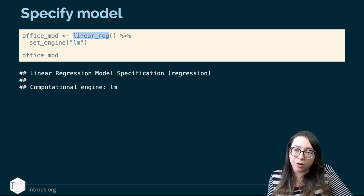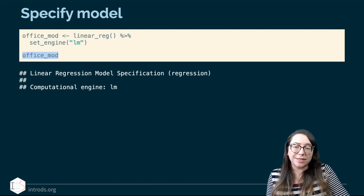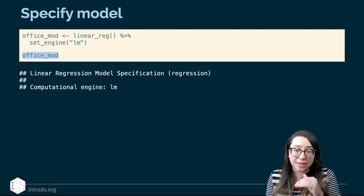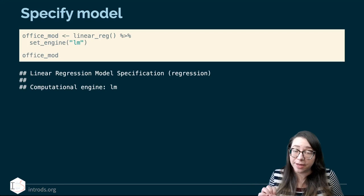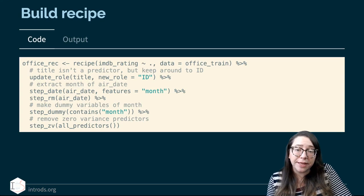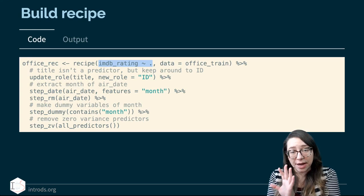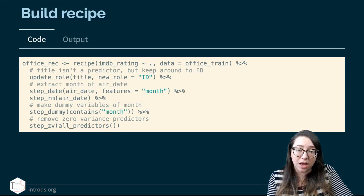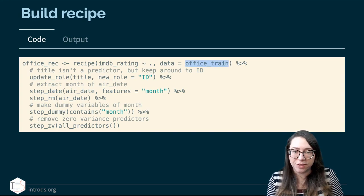We specify our model and set our engine, and I'm going to save that object with the suffix _mod for the model — that's going to become part of my workflow. Specifying the model is step one. Then I want to build a recipe. Our recipe starts with our formula: we want IMDB rating as our outcome variable, tilde, versus everything else — that's what the dot stands for — and our data comes from the training data set, office_train.